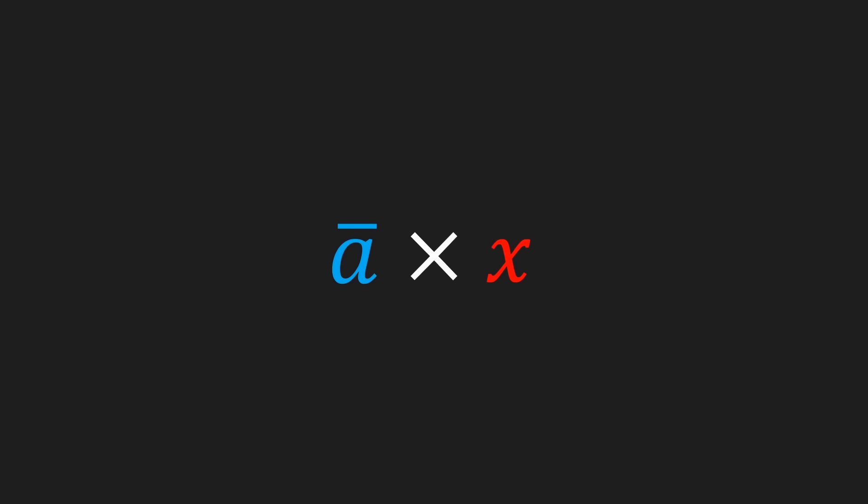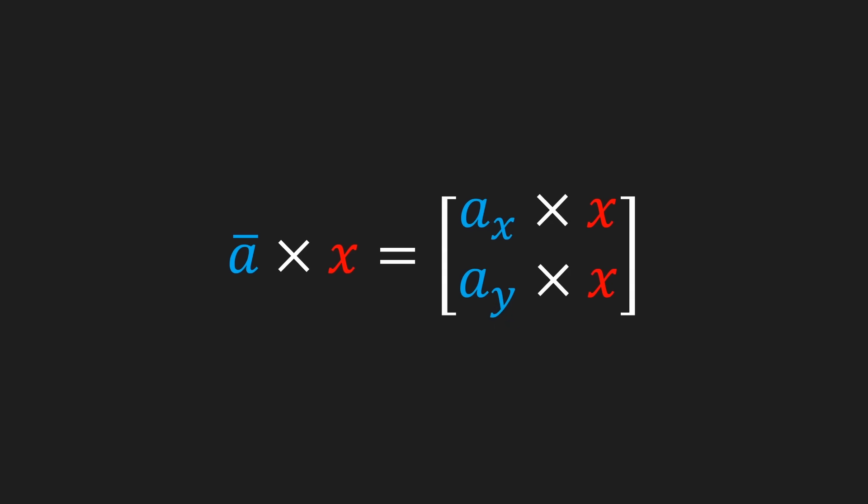Alright, let's now move on to scalar operations. Scalar operations are just operations between a vector and a number. x is the number and it's also called a scalar, but more on that later. The operation could be a multiplication or a division. I'm gonna continue to explain scalar multiplication, but scalar division is completely analogous. To multiply a vector with a scalar we just multiply every component of that vector with the scalar.